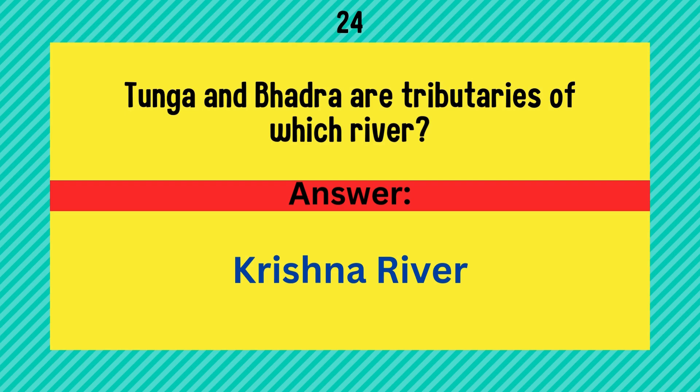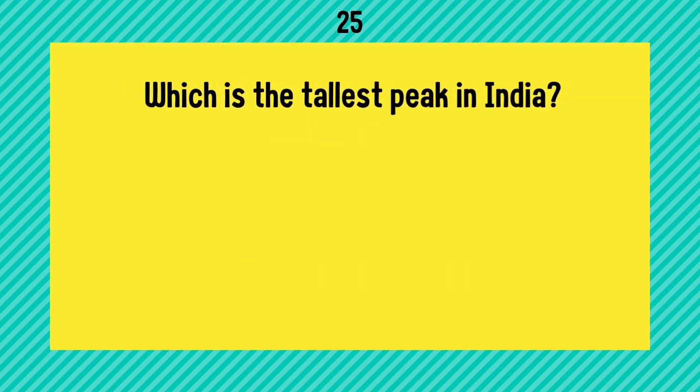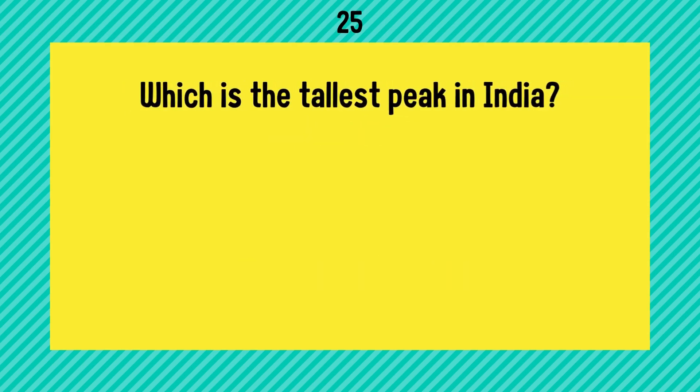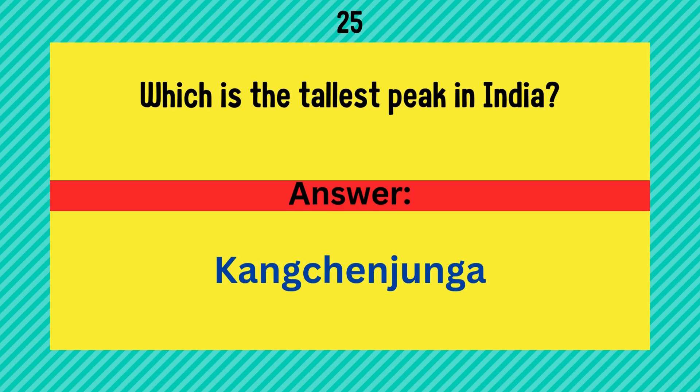Tunga and Bhadra are tributaries of which river? Answer is Krishna River. Which is the tallest peak in India? It is Kangchenjunga.